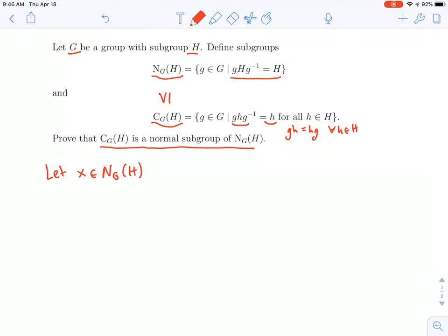Let me take an element from the normalizer of H and conjugate the centralizer by it. In fact, what I'll do is I'll take an element of the centralizer. So how about we call it c for centralizer? So I'll take some little c, which centralizes H. And I want to show that if I conjugate little c by x, I want this to again be in the centralizer.